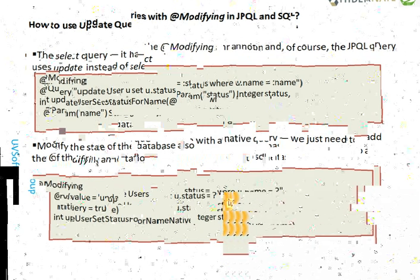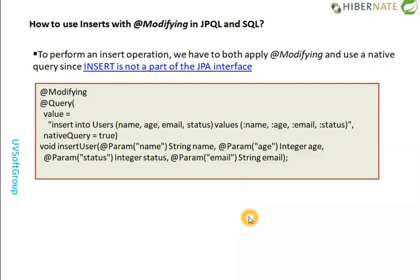This is the JPQL approach and this is the native approach — you can go with either to write modify queries. Here is an example where I pass values, the name, email, and status, parameterized with @Param like status and email address. For complete model updates I say use the default CrudRepository or JPA repository, which works in a very flexible way. But if you need to modify only one or two parts — like status information or email address — I suggest using this specific modify query approach.